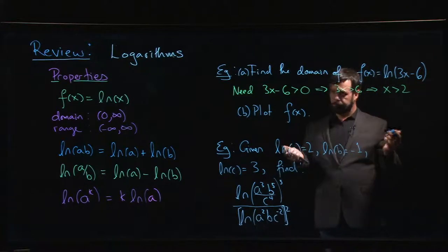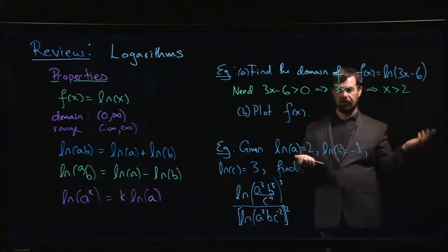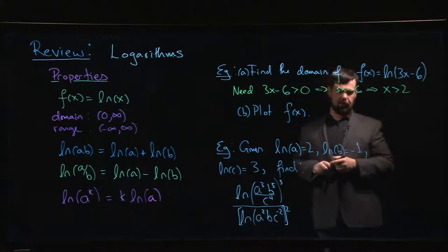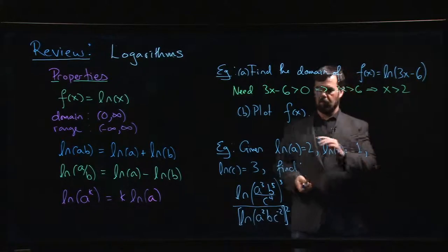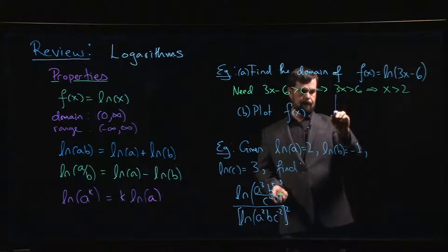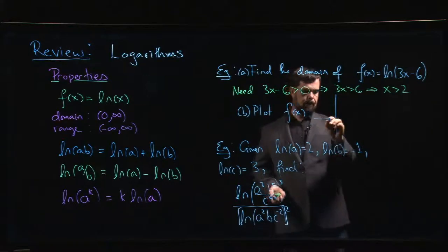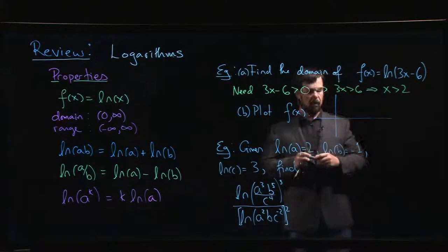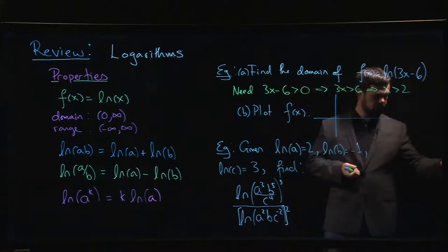If you prefer, you can write that as the interval from 2 to infinity. So that means that if you were going to try to plot the function, the first thing you're going to need is a vertical asymptote.